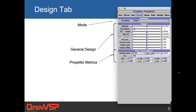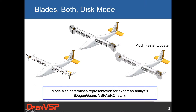Starting with the propeller mode up at the top, you get three choices. You can show it as blades, as both, or as a disc. With the X57 model, we're showing all propellers as blades, rendering and modeling every blade individually. On the far right, we're ignoring the blades and just showing an actuator disc, so we have the diameter and position represented in orientation, showing the arc of movement for each of those props.